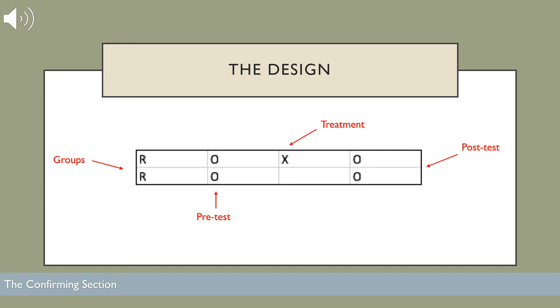So here's a depiction of what our experimental design will look like. R being our two groups, O being our pre-test, X being the treatment, and then the second pair of O's being the post-test.